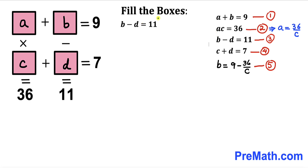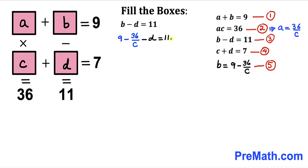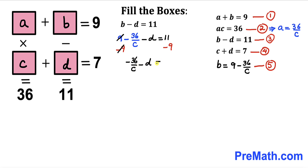Now let's focus on equation 3: b minus d equals 11. We know from equation 5 that b equals 9 minus 36 divided by c, so I substitute that in. Subtracting 9 from both sides, this gives us negative 36 divided by c minus d equals positive 2. Multiplying through by negative 1 across the board gives us 36 divided by c plus d equals negative 2.